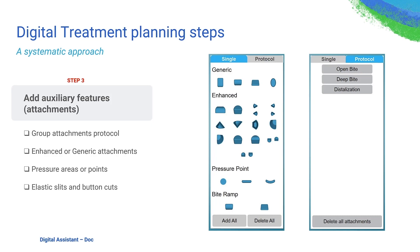The next step is to add auxiliaries — basically attachments, elastic slits and buttons, pressure points. For attachments, we have two approaches: you have the protocol attachments for open bite, deep bite, and distalization. You could also create your own attachments, which is a huge advantage — you can use single attachments that we have, both generic and enhanced. In the new version coming very soon, we actually improved the automatic placement of these attachments. Sky's the limit when it comes to your lab — you can create your own system, use the built-in system, modify it, and save it as your own protocols.